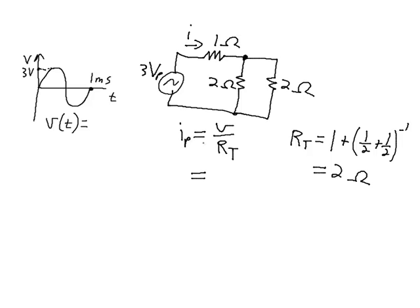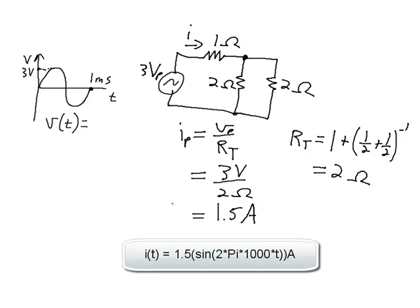So the peak current, maybe I should write that there, peak current and peak voltage is equal to 3 volts over 2 ohms equals 1.5 amps. So peak current is 1.5 amps.